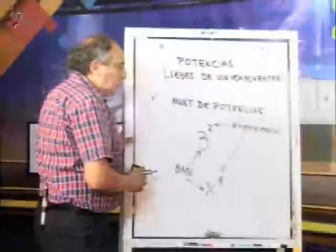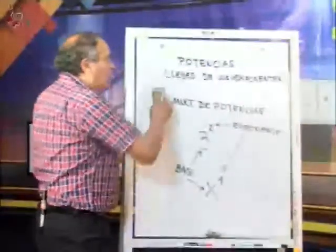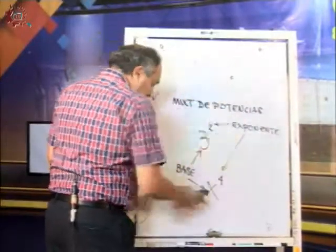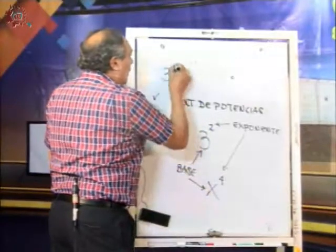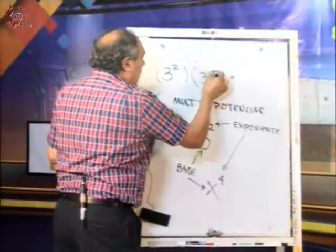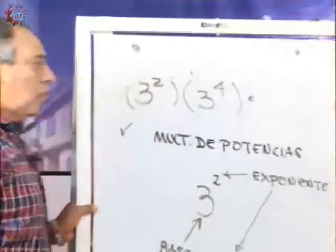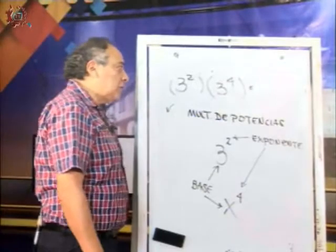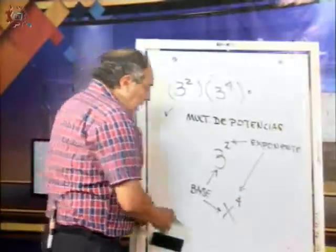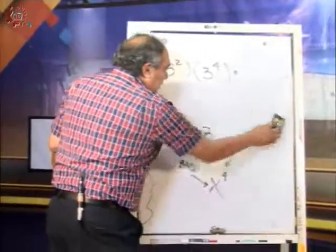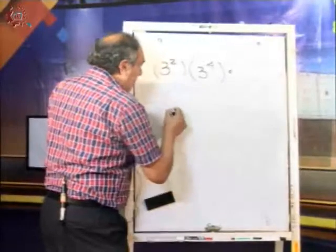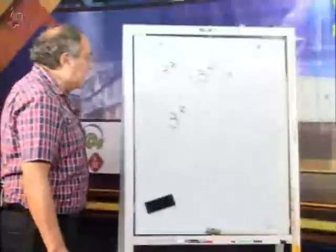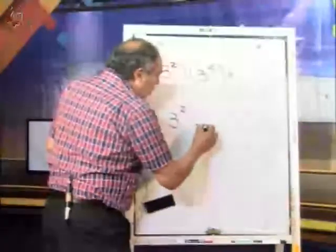¿A qué se refiere la multiplicación de potencias de la misma base? Podemos tener una multiplicación como: 3 al cuadrado por 3 a la cuarta. Recordemos que el paréntesis indica símbolo de multiplicación. El concepto más sencillo de potencias es el siguiente: coloquialmente hablando, es como si el 2 le dijera al 3: multiplícate por ti mismo dos veces.